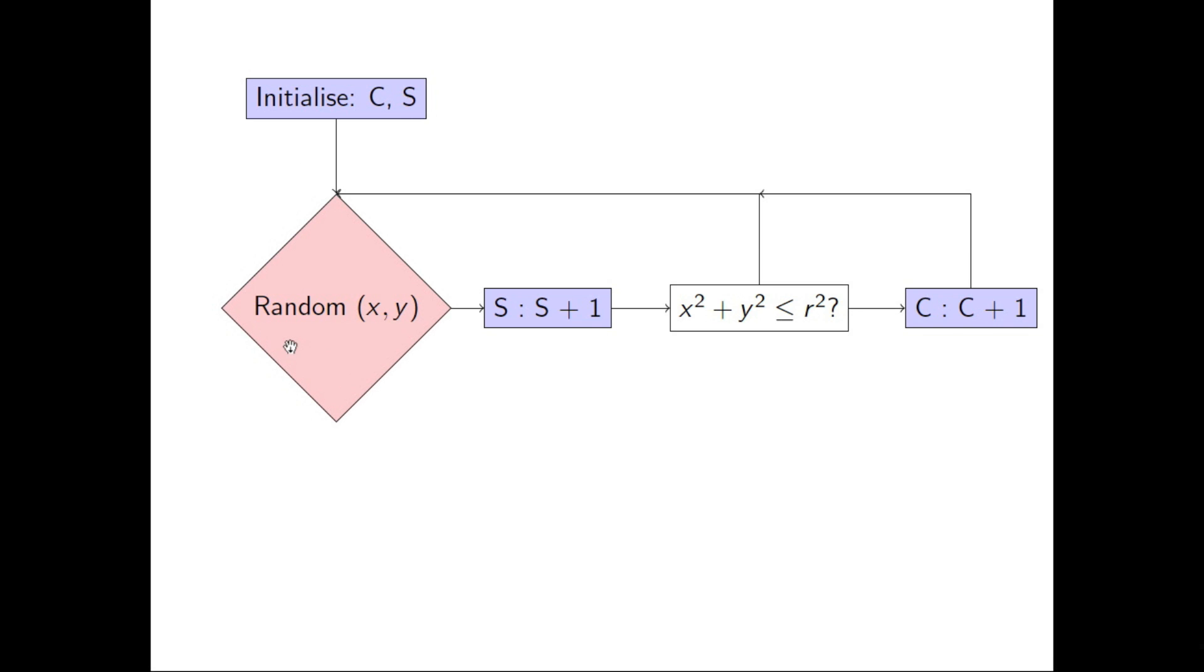And then what we do is we get the computer to select two random numbers, x and y, in other words, the location of the point in our square. We increment S, so make S go up by 1, and then we do a quick check.